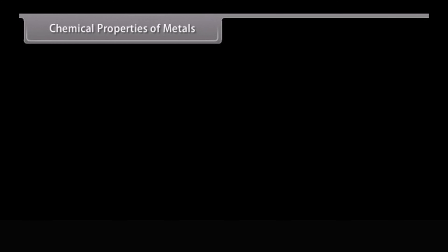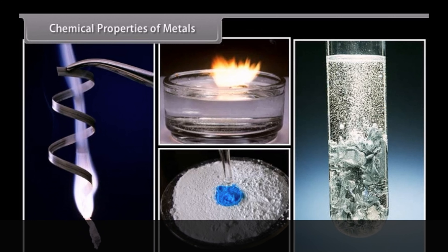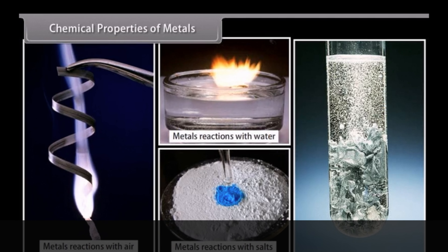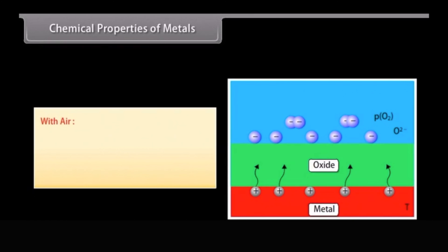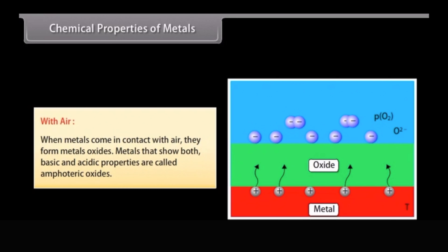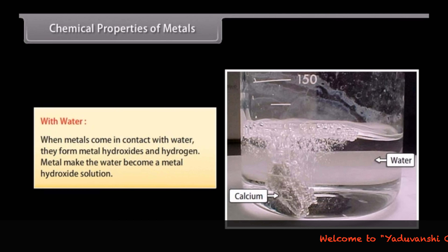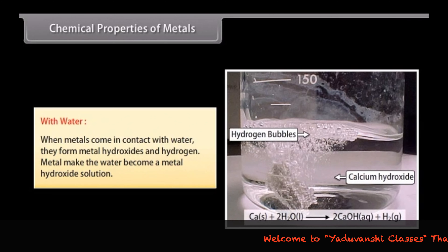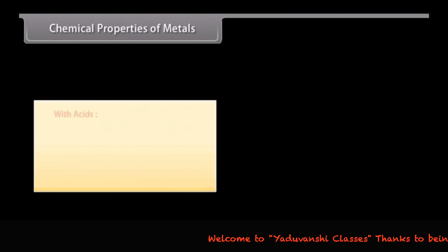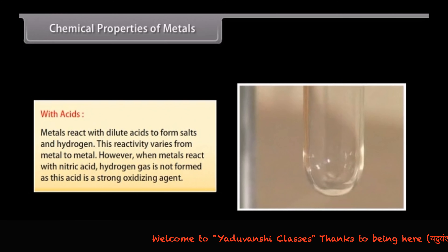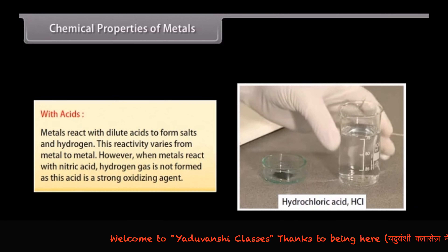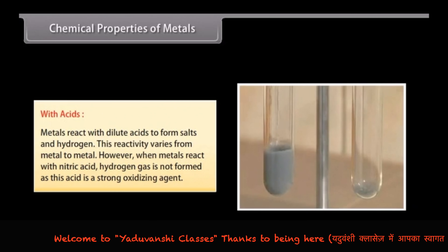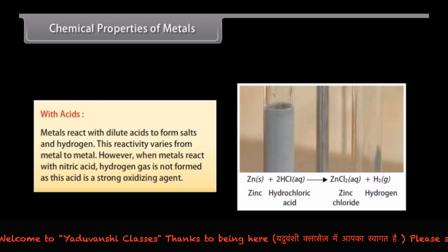Chemical properties of metals. Let us look at some chemical properties of metals. These properties include reactions of metals with other elements — that is, air, water, acids, and other metal salts. With air: when metals come in contact with air, they form metal oxides. Some metals show both basic and acidic properties and are called amphoteric oxides. With water: when metals come in contact with water, they form metal hydroxides and hydrogen. With acids: metals react with dilute acids to form salts and hydrogen, though this reactivity varies from metal to metal. However, when metals react with nitric acid, hydrogen gas is not formed, as this acid is a strong oxidizing agent.